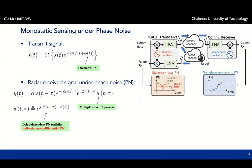In both cases it can be shown that the phase noise is stationary. So we see immediately from looking at those trajectories that by looking at the phase noise we can say something about the range of the target. On the other hand, in communication the phase noise is non-stationary and doesn't tell you anything about the communication channel.